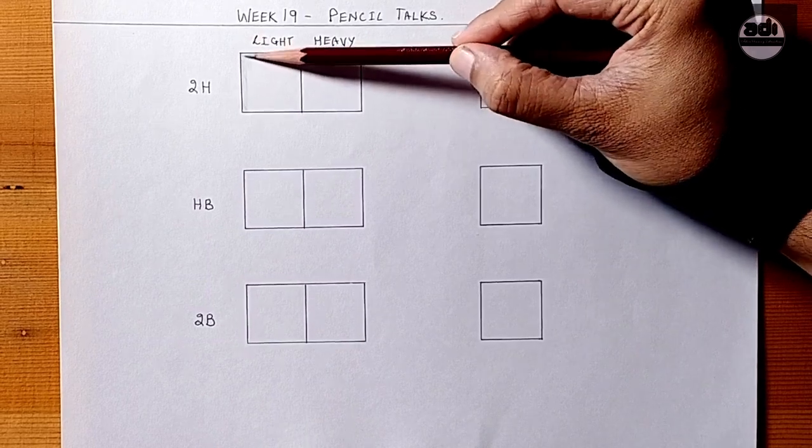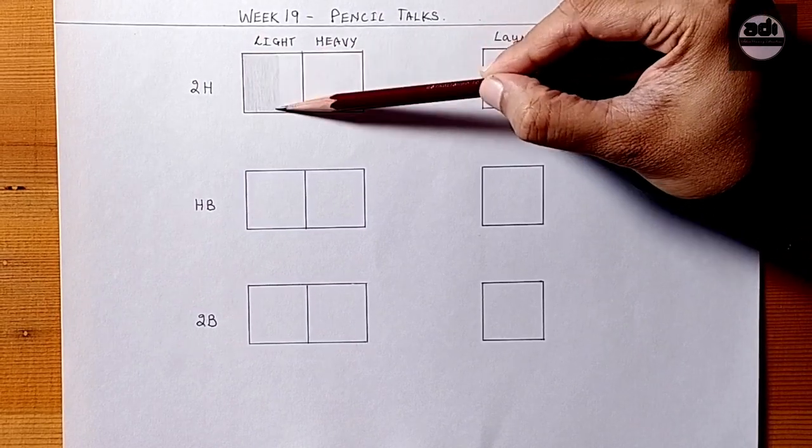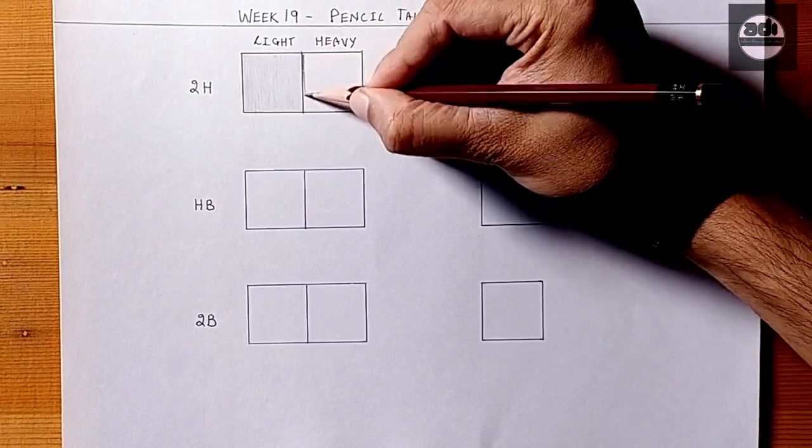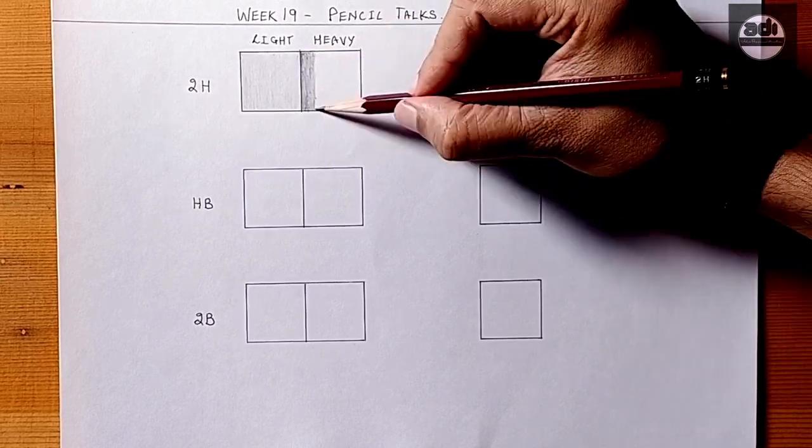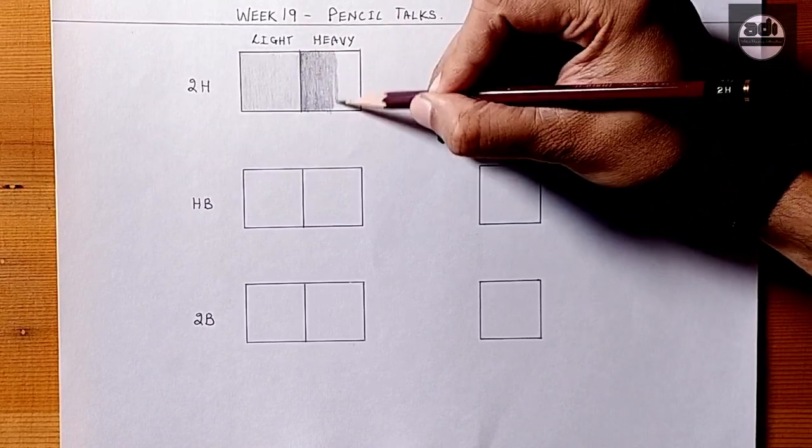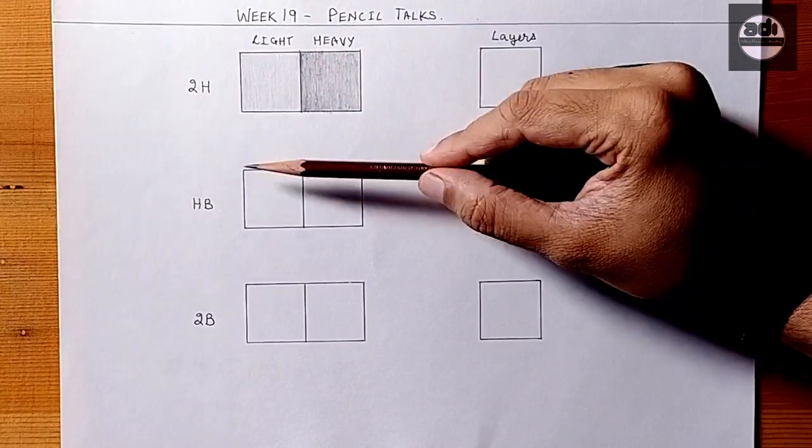If you have to press hard to achieve a value, that is your pencil telling you that you need to use a softer pencil. If you are getting too dark even with a light touch, you need to use a harder pencil.